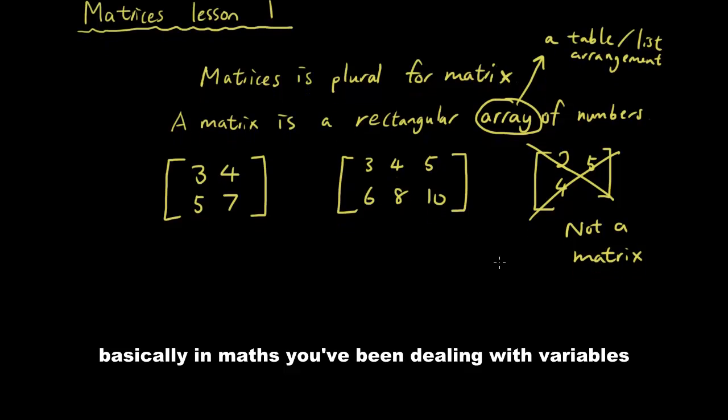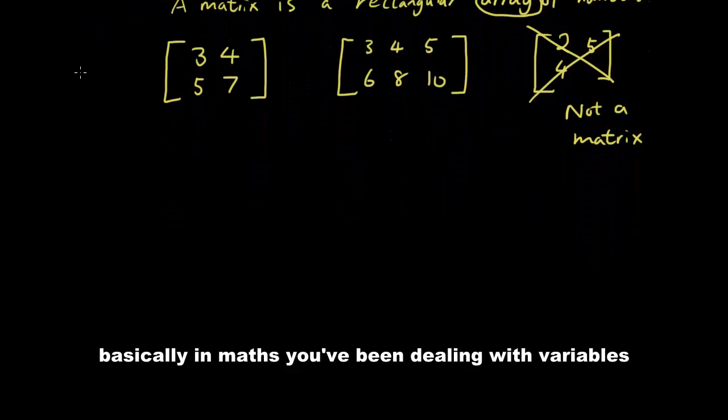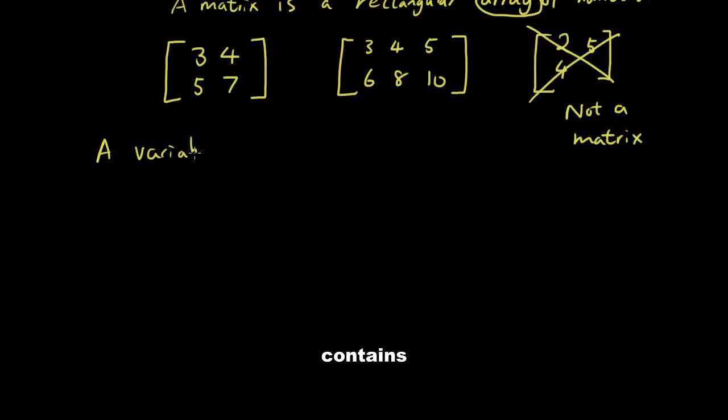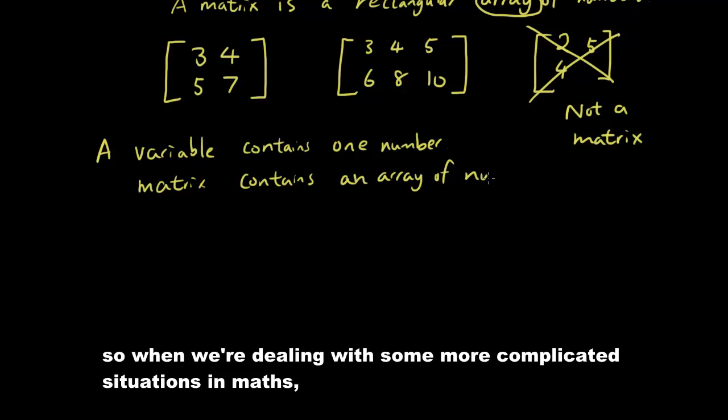And basically, in math, you've been dealing with variables. So a variable contains one number. A variable is like a container for a number. Whereas, a matrix contains a list, an array of numbers.